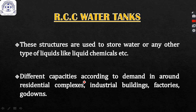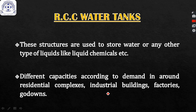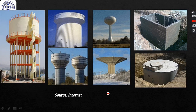Polyethylene tanks are most commonly used nowadays. For colonies having large numbers of flats or family dwellings, we require large capacities of water to be stored. For industrial buildings, factories, and godowns, we may require water or other chemicals to be stored in large amounts, and for that we require RCC water tanks.